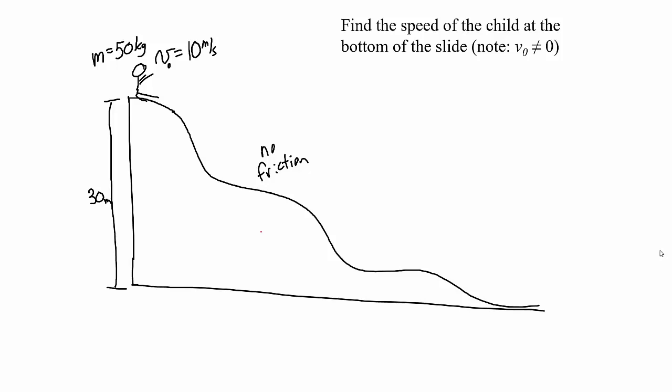The work done by the force of gravity is positive because the force of gravity is downward and the child is moving downward. It's mg times the vertical distance d — 50 kilograms times 9.8 meters per second squared times 30 meters. So the work done by gravity is positive 14,700 joules.